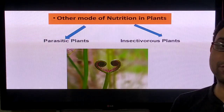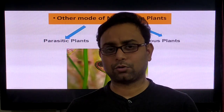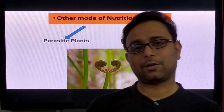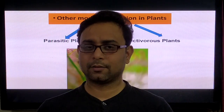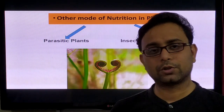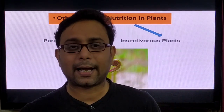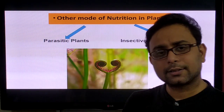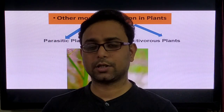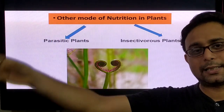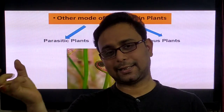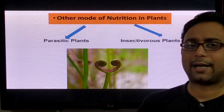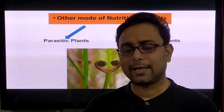You already know that plants are autotrophic in nature because they can produce their own food through photosynthesis. But some plants cannot produce their own food, so they depend on other plants for their food — these are called parasitic plants. Some other plants require more nitrogen, so they trap insects and take the nitrogen from the insect body — these are called insectivorous plants. These are the two important topics we will discuss today.